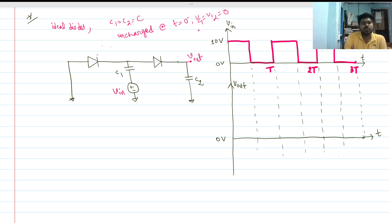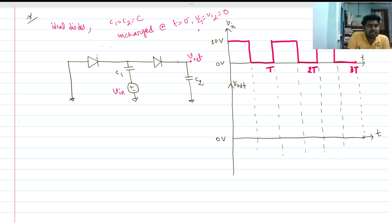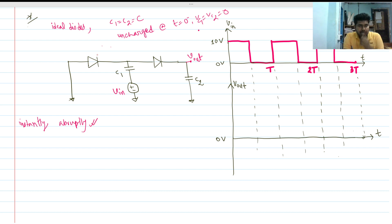For diode conduction we can do the open circuit test or short circuit test. First we will do the open circuit test. At t equals zero, if the diode conducts there will be infinite current through the capacitor as there is no resistance present. So the voltage across the capacitor can change instantaneously — the charging and discharging will happen instantly, or abruptly.